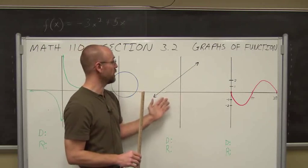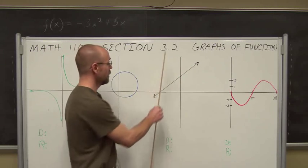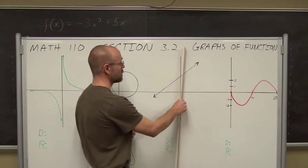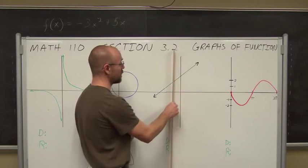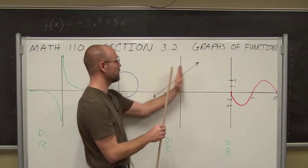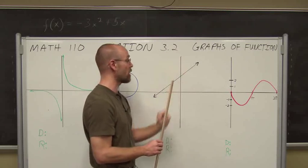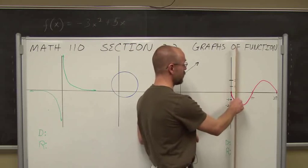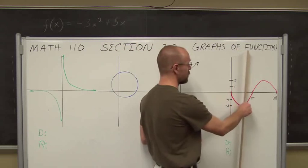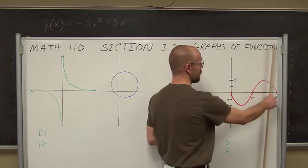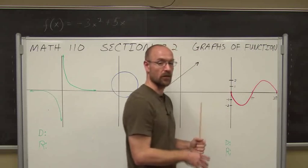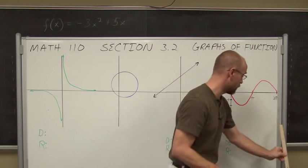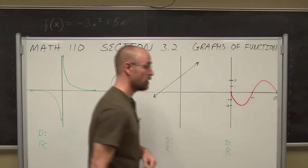If we look at this one, it's a line. If we use the vertical line test, we see yes, this is a function because my vertical line will only intersect it once no matter where I put it. So for this graph, a vertical line only intersects it once for each value of x. So it is truly a function.